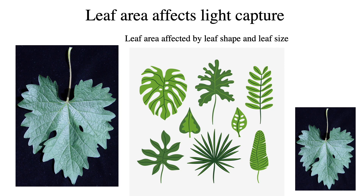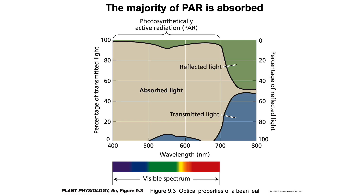An important aspect of light capture is the leaf area. Leaf area can be affected by leaf shape and leaf size, as well as the environment. Shown here are the percentages of light absorbed, reflected, and transmitted as a function of the wavelength of light. The transmitted and reflected green light in the wave band at 500 to 600 nanometers gives leaves their green color. Note that most of the light above 700 nanometers is not absorbed, while most of the light in the photosynthetically active radiation range between 400 and 700 nanometers is largely absorbed by the leaf.